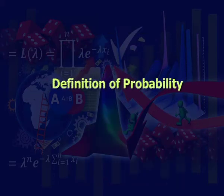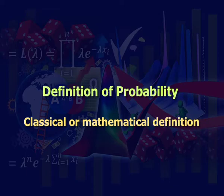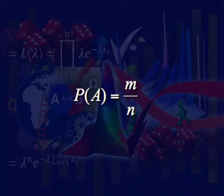Let us move to the definition of probability. Classical or mathematical definition: if an experiment can result in n exhaustive, mutually exclusive and equally likely ways, and if m of them are favorable to the happening of an event A, then the probability of happening of event A is defined as the ratio of m to n. Probability of A is given by m upon n.